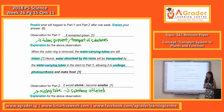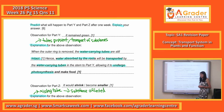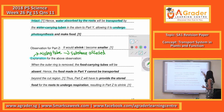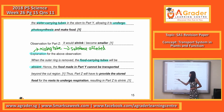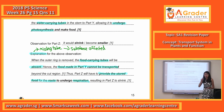Part Z is the one that stores food. So the food made in the leaves cannot be transported down, and the bottom part of the plant must obtain food from Part Z. Since Part Z is your storage roots, the food stored inside will be used up because food is unable to be transported down. You must mention that the food-carrying tubes are absent or missing. Food in the leaves cannot be transported down beyond the cut region. Part Z has to provide stored food for the roots to undergo respiration, and Part Z will shrink or become smaller because the food is being used up.